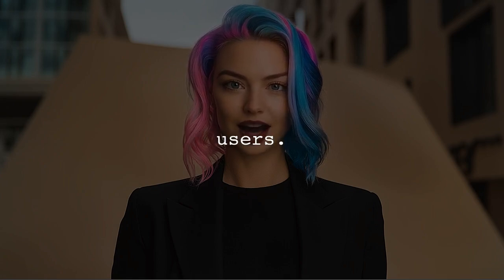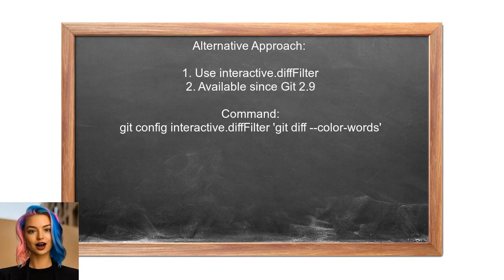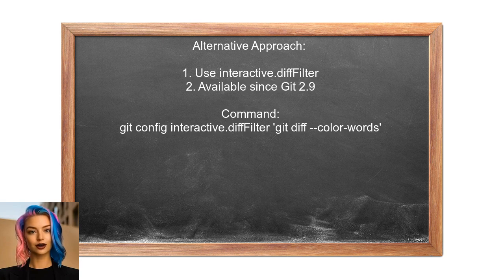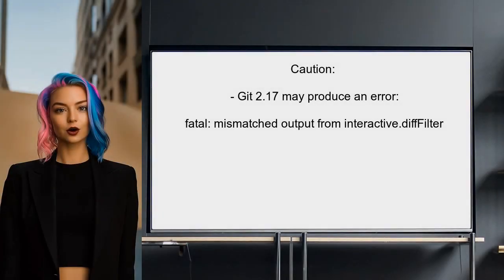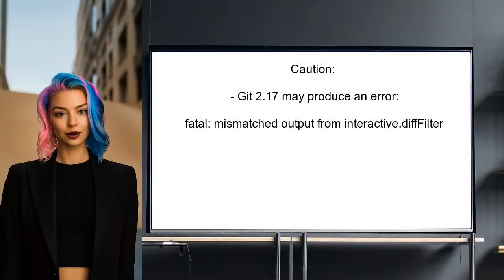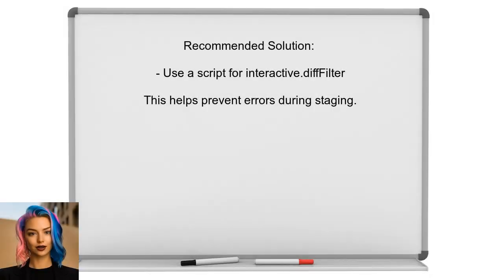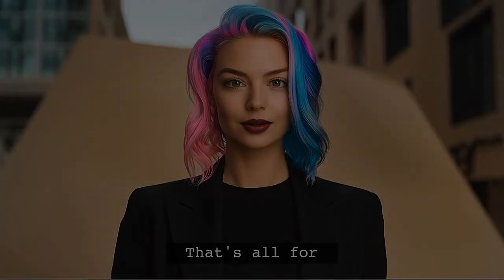Let's look at the answers provided by other users. One alternative approach is to use the interactive.diff filter property, available since git version 2.9. This allows you to customize how diffs are displayed during interactive staging. However, be cautious — since git version 2.17, using this command directly with git add -p may result in an error message about mismatched output. To avoid this issue, it's safer to use a script for the interactive.diff filter setting.